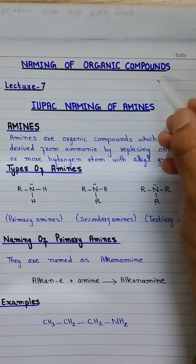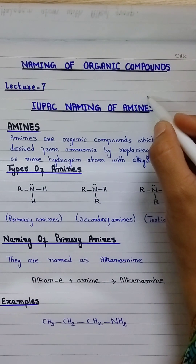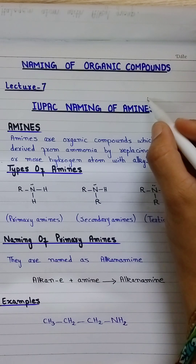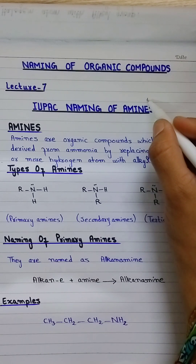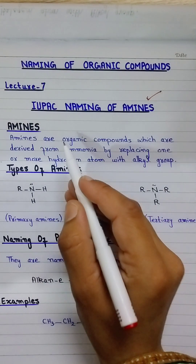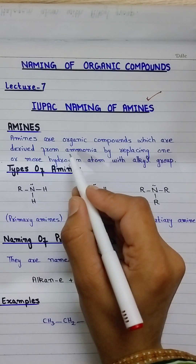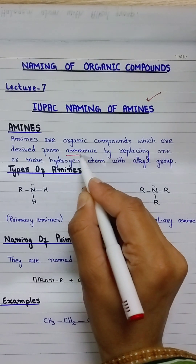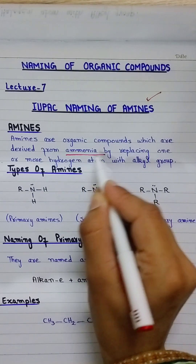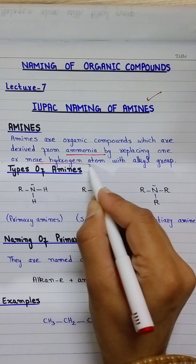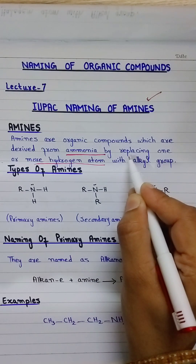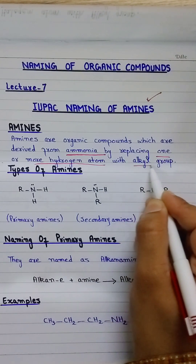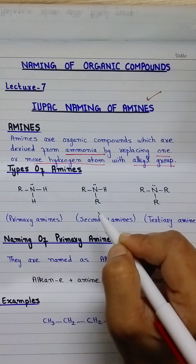Assalamualaikum students. Today our next topic is naming of organic compounds — IUPAC naming of amines. Amines are organic compounds which are derived from ammonia by replacing one or more hydrogen atoms with an alkyl group. Such organic compounds are called amines.